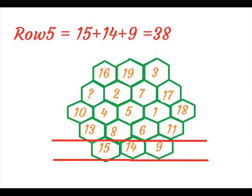On adding row 5, we get 15 plus 14 plus 9 is equal to 38.